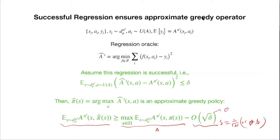You can verify this inequality yourself — it is not very hard. All you need is to translate the supervised learning guarantee into this approximation error. Conceptually: the better your regression, the better your greedy policy selection procedure based on regression.